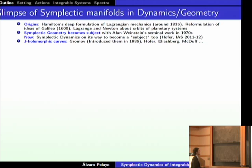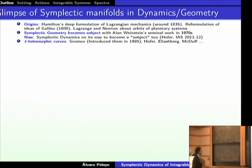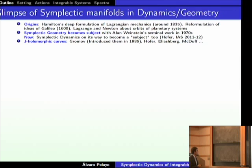The origins are with Hamilton's formulation of Lagrangian mechanics in the early 19th century, reformulating ideas of Galileo, Lagrange, and Newton about the orbits of planetary systems. Symplectic geometry probably became a subject in the early 1970s with the foundational work of Alan Weinstein. And now symplectic dynamics is also on its way to become a subject — we have next year a symplectic dynamics year here at the Institute. Symplectic geometry was revolutionized in the early 1980s by the work of Gromov, who introduced J-holomorphic curves.